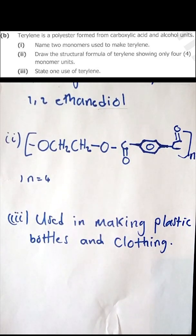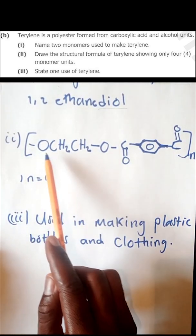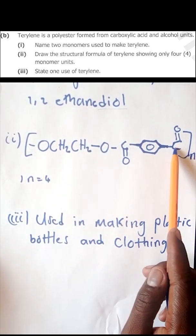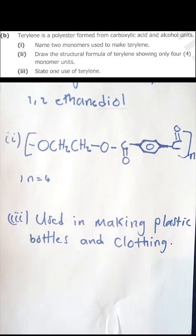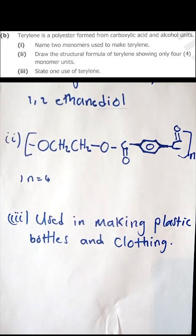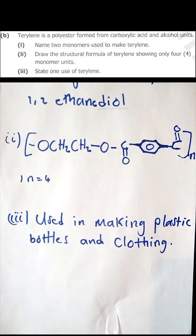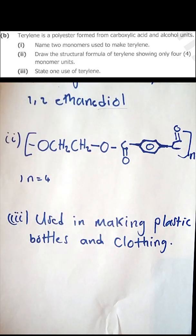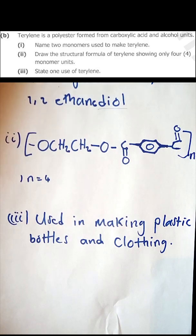Question 2: draw the structural formula of Terylene showing only four monomer units. The monomer unit is shown — you simply repeat it four times to draw four monomer units. These structures must be memorized. Question 3: state one use of Terylene. Terylene is used in making plastic bottles and also in clothing. This wraps up the worked solutions for the 2016 Paper 2 Chemistry questions.